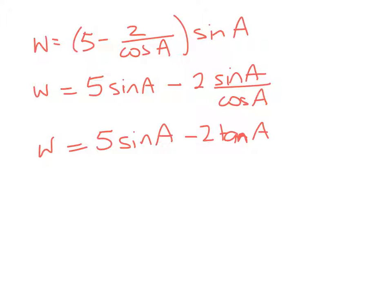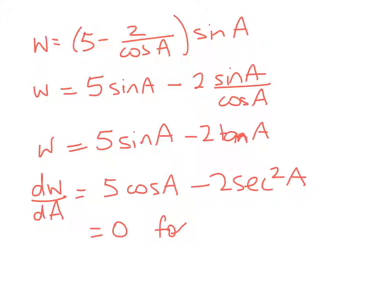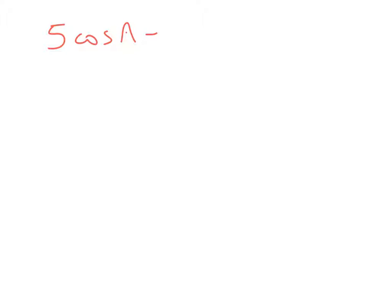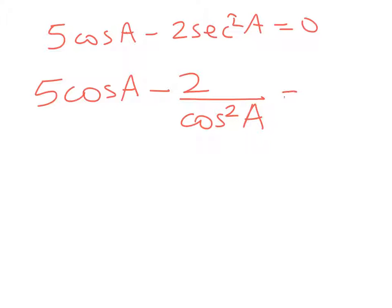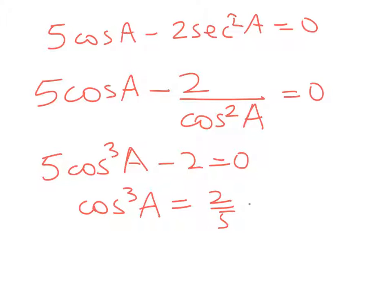As we want to minimize the width, we're going to have dw by da is equal to 5 cosine a minus 2 sec squared a. So we want that to be equal to 0 for a min or max. So 5 cos a minus 2 over cos squared a equals 0. It doesn't look very nice until we remember what sec is. Multiply everything through by cos squared and we get 5 cos cubed a minus 2 equals 0.